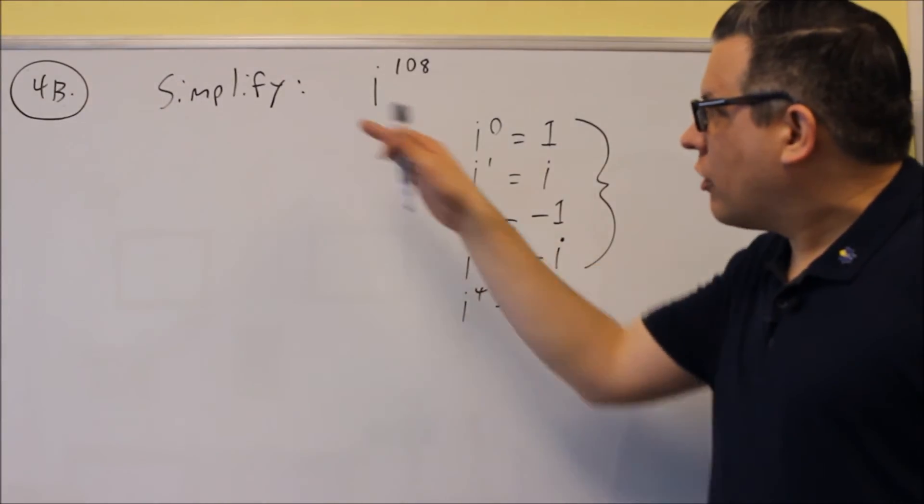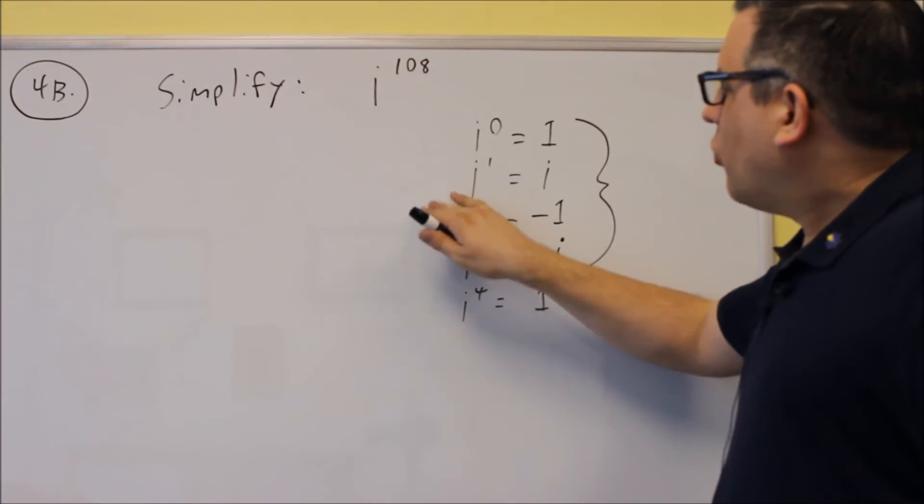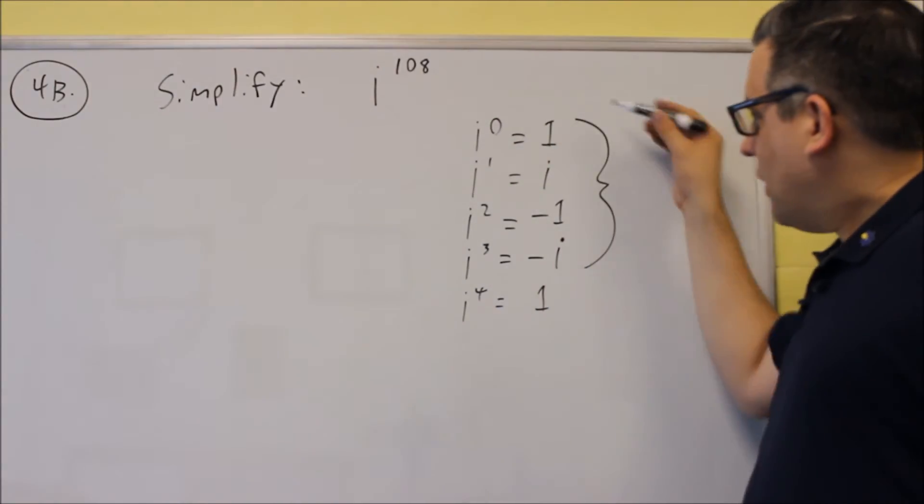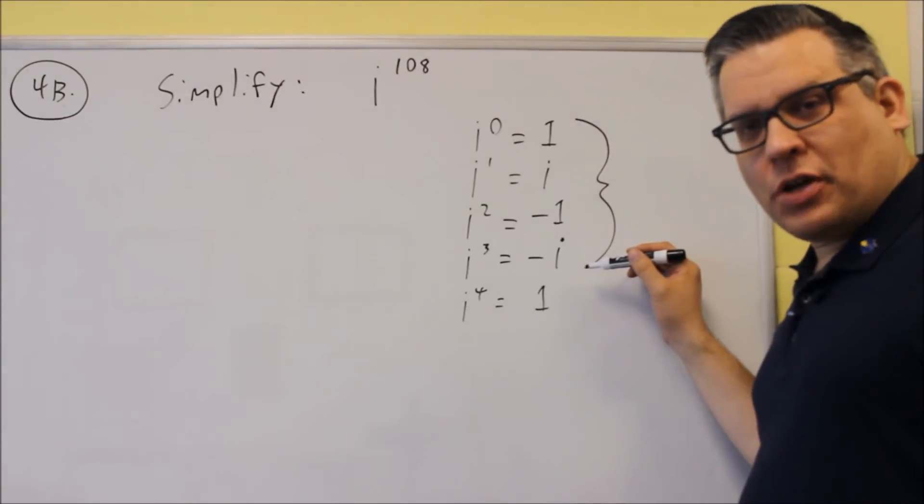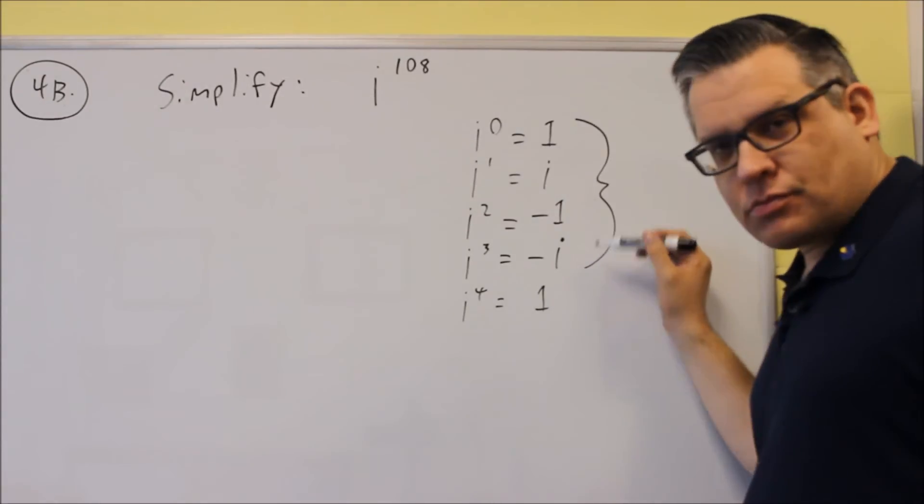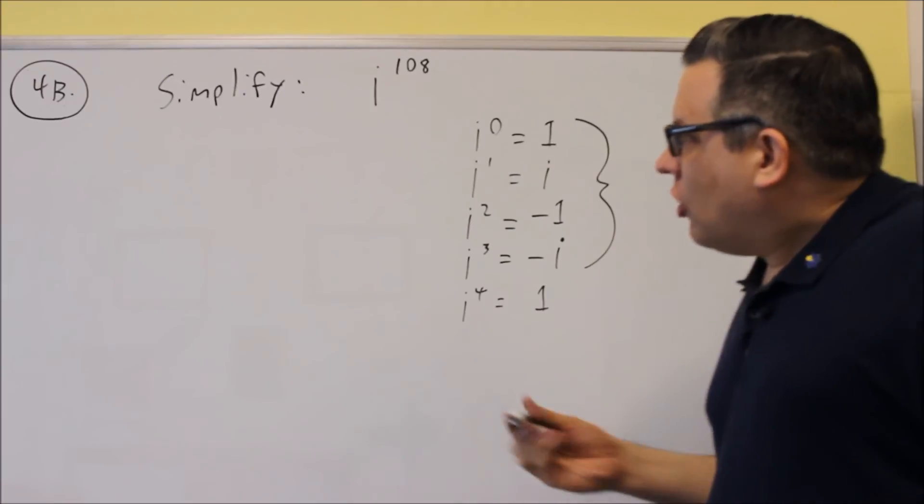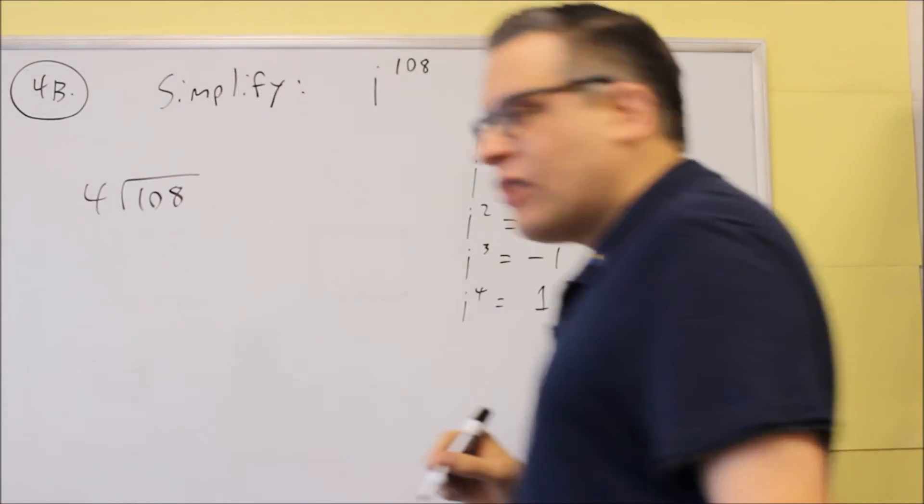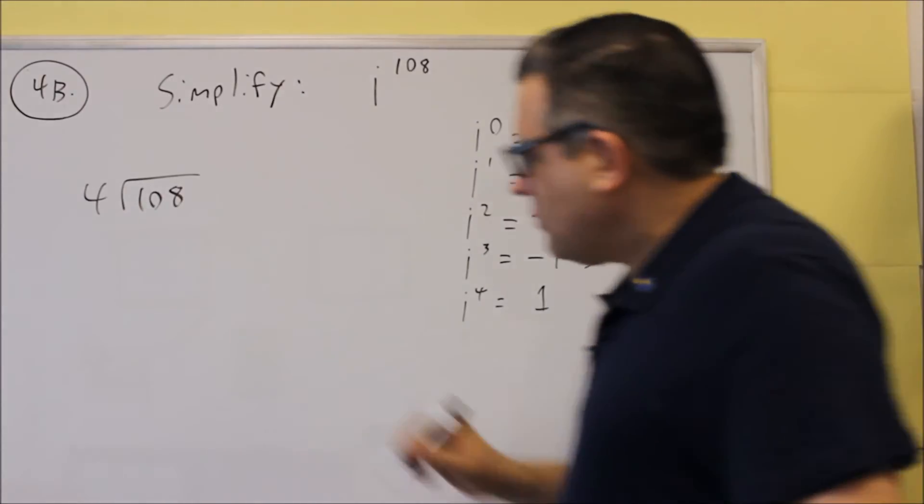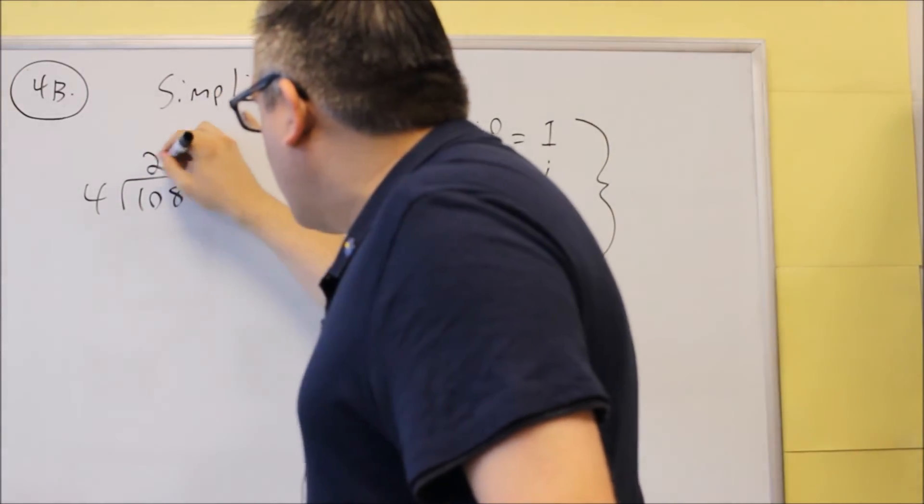Okay, for 4b, we're doing another one of these again where you have i raised to a certain power. As I talked about before, you have this set of 4 that keeps repeating, so you want to make sure you know this pattern. We're going to take 108 and divide it by 4, and we want to find out what the remainder is.